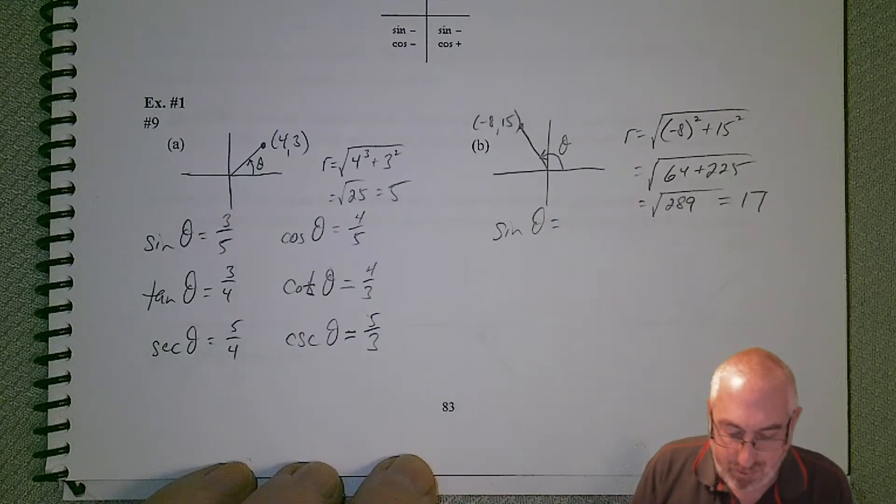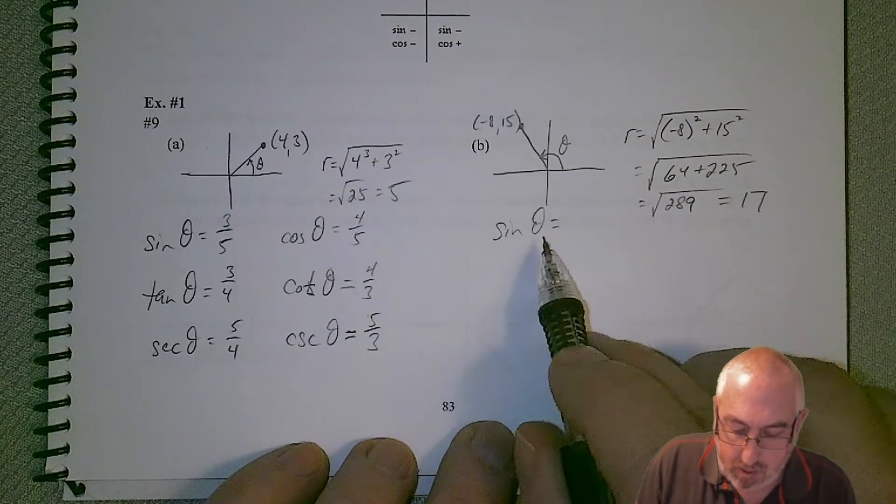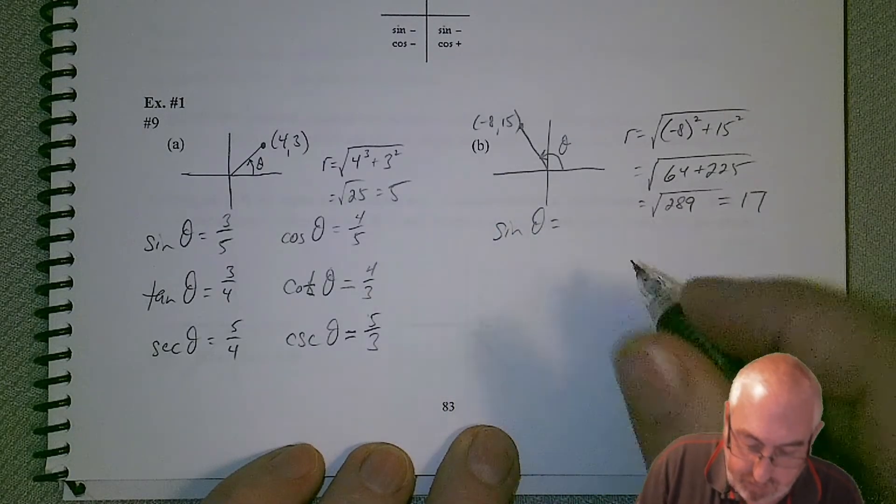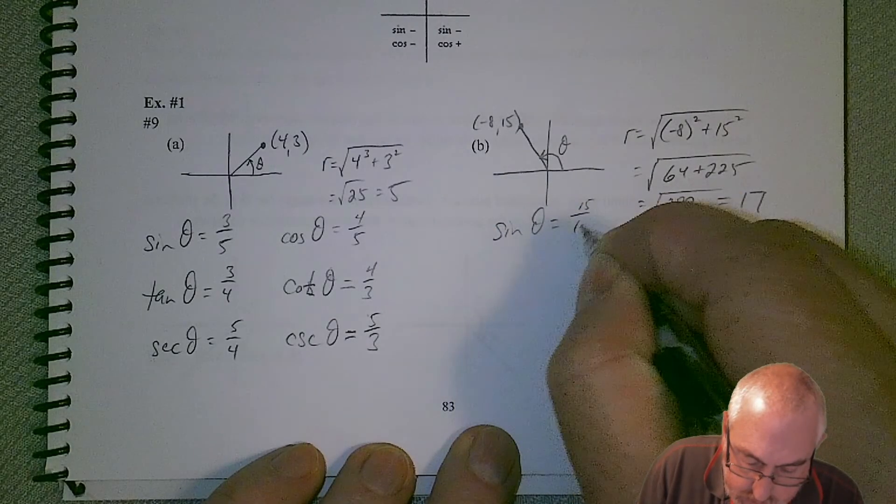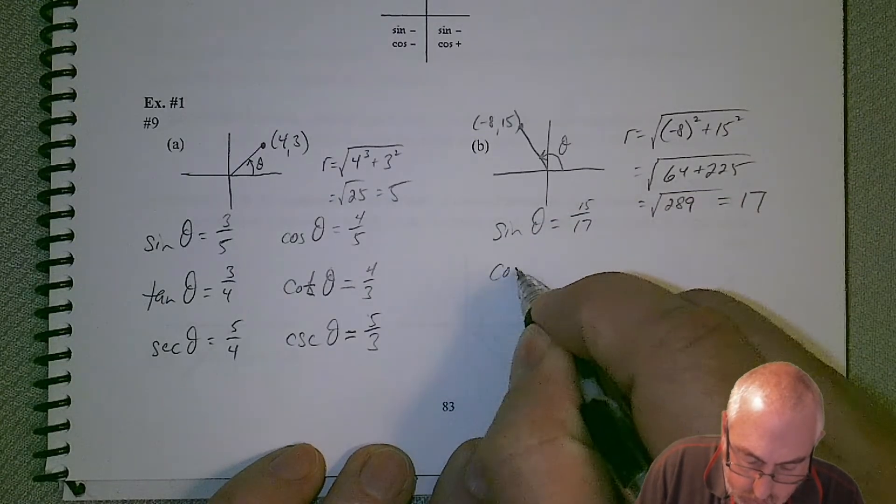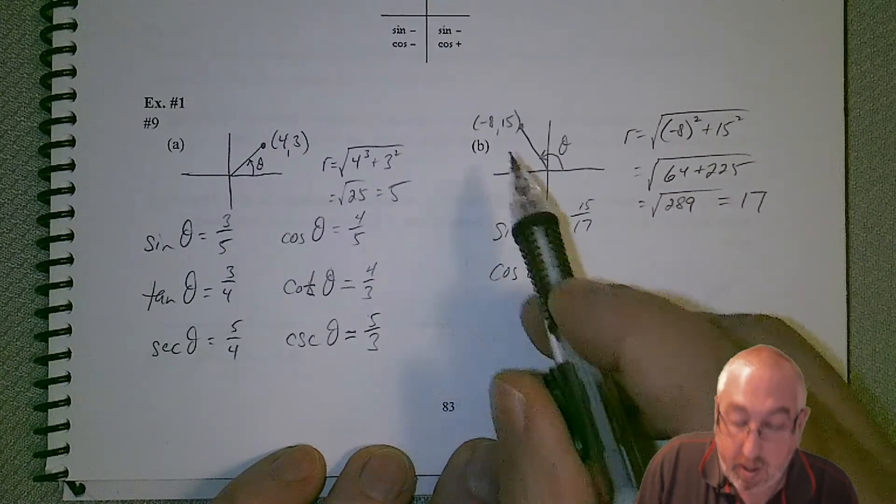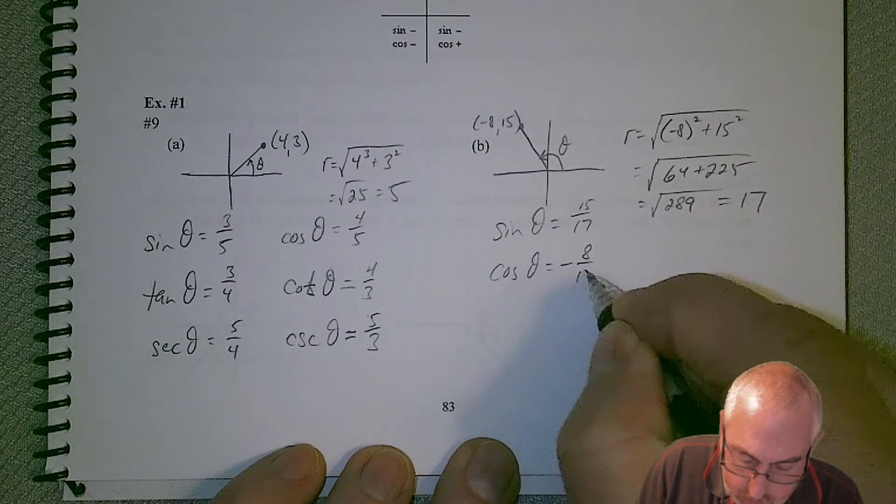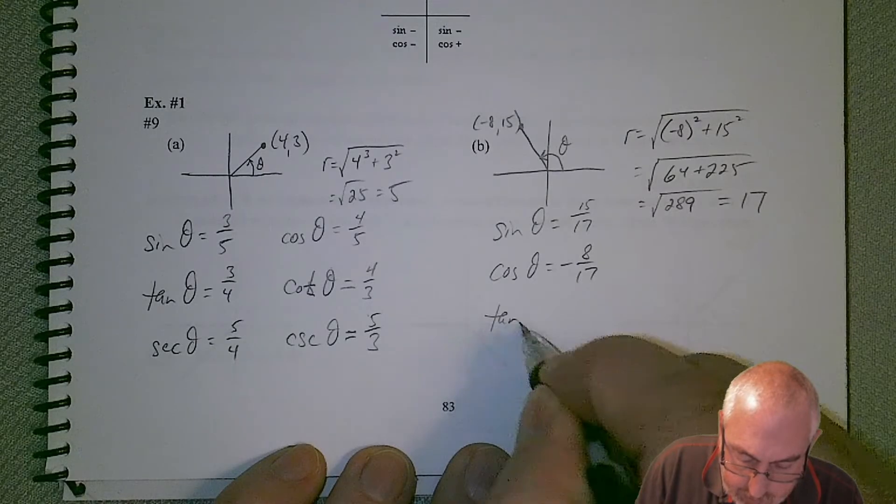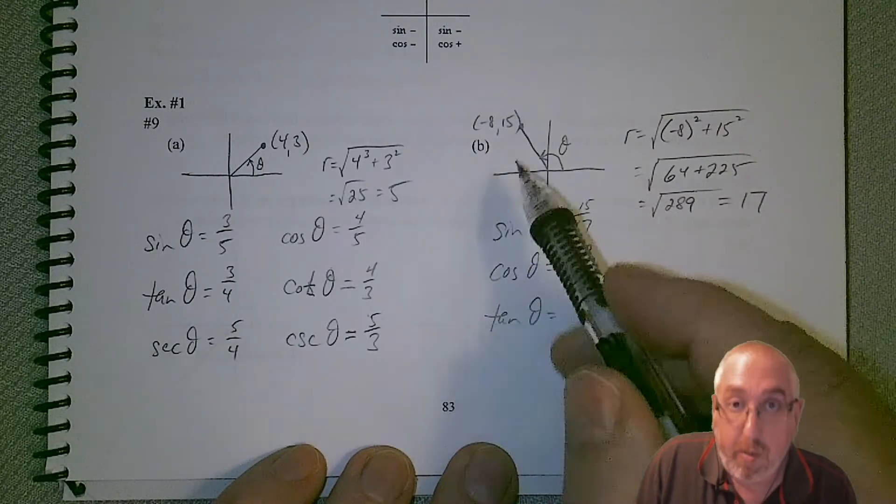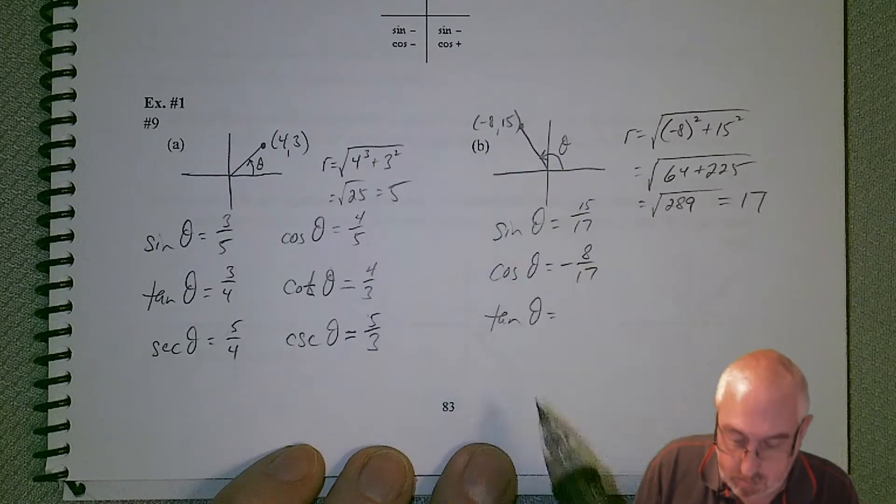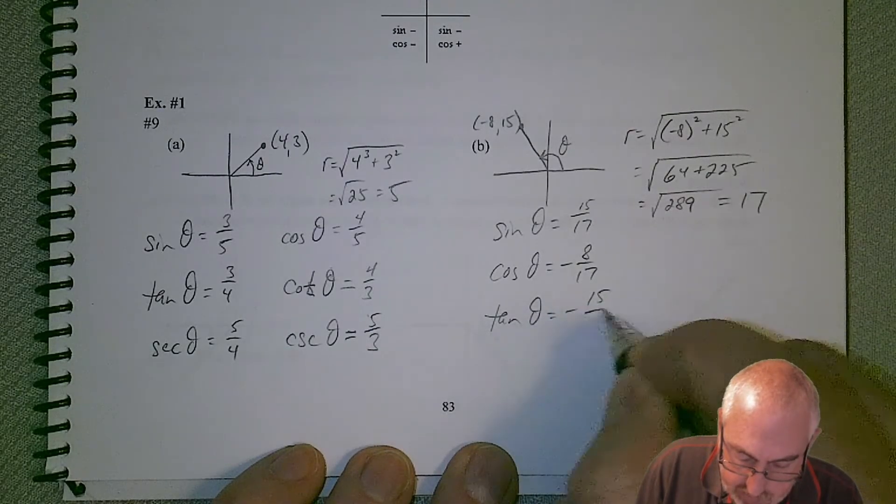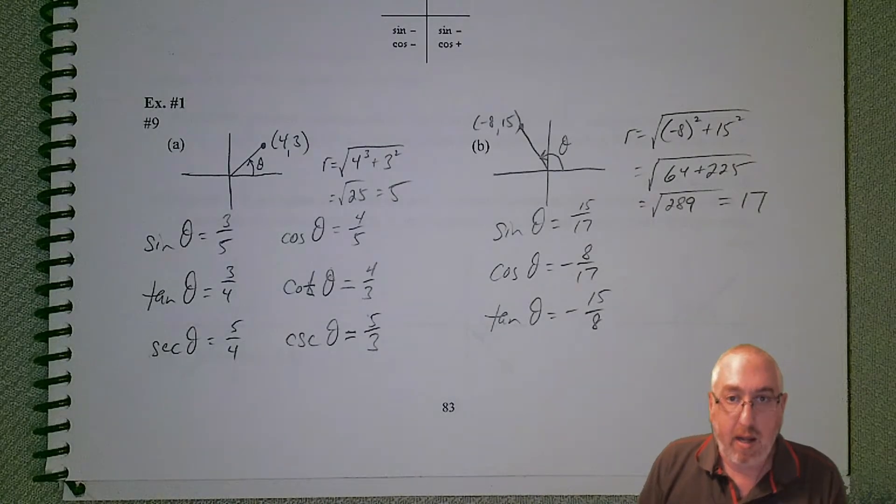so now we can get our trig functions. Sine should be y over r, so 15 over 17. Cosine is going to be x over r, so it will be a negative value, negative 8 over 17. Then tangent should be y over x, so 15 over negative 8, or let's just make the whole fraction negative, negative 15 eighths.